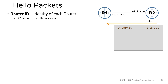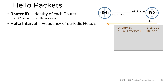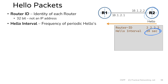The next piece of information inside a hello packet is the hello interval. This is the duration in between these periodic hellos. In this case, router 2 is using the default of 10 seconds, meaning router 2 is planning to send a hello packet every 10 seconds on this link.